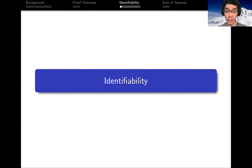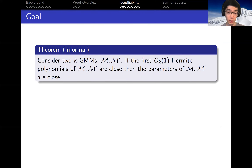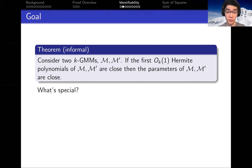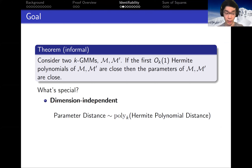The key ingredient in our proof is identifiability — that the Hermite moments suffice to identify the parameters. I'll give a sketch of the proof of identifiability. The goal is to show: if two GMMs match on their first several Hermite moments, then their parameters must be the same. The main reason we need a new proof is that it gives dimension-independent identifiability, relating parameter distance and distance between the Hermite moments up to polynomial factors in K but no factors depending on D, the dimension. Whereas previous identifiability proofs do lose factors of D. Our proof is also purely algebraic, which is useful for eventually translating it into an algorithm.